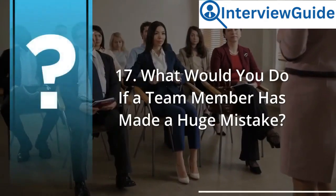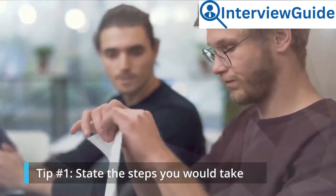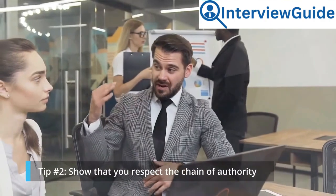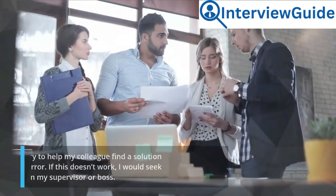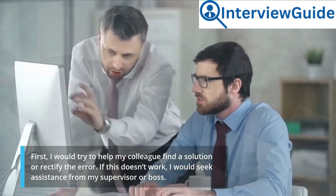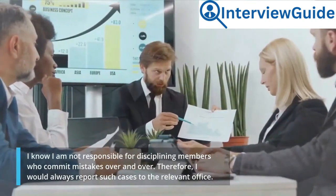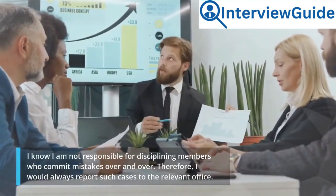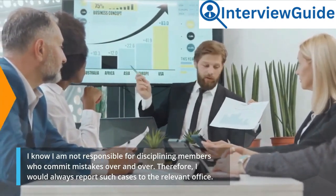Question 17: What would you do if a team member has made a huge mistake? This question seeks to test how you would react when your colleagues commit intense mistakes. Tip number 1: state the steps you would take. Tip number 2: show that you respect the chain of authority. Sample answer: First, I would try to help my colleague find a solution or rectify the error. If this doesn't work, I would seek assistance from my supervisor or boss. I know I am not responsible for disciplining members who commit mistakes over and over. Therefore, I would always report such cases to the relevant office.